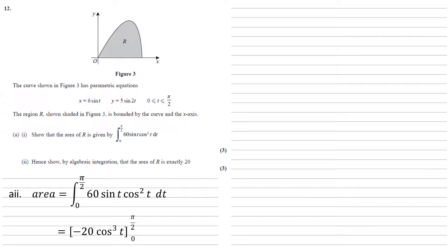We're doing this between pi over 2 and 0. Putting those numbers in, we get minus 20 times cos cubed pi over 2, minus minus, so plus 20 cos cubed 0. Cos pi over 2 is 0, cos 0 is 1. So we've got minus 20 times 0 plus 20 times 1, which is 0 plus 20, which is 20 as required.